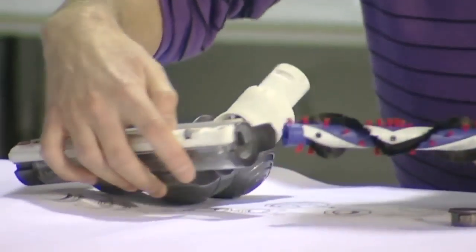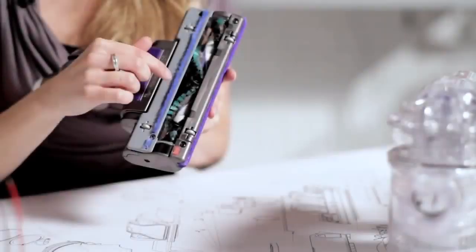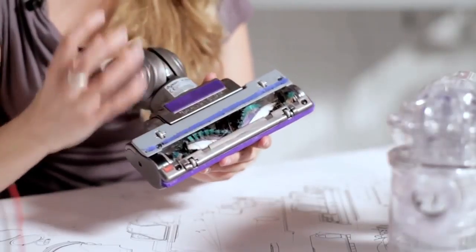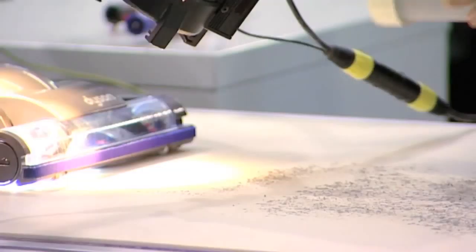The brush bar in this machine is made up of nylon bristles and carbon fibre. We've added carbon fibre because as brush bars spin at high speed, they sometimes create a static charge which makes fine dust particles stick to hard floors.